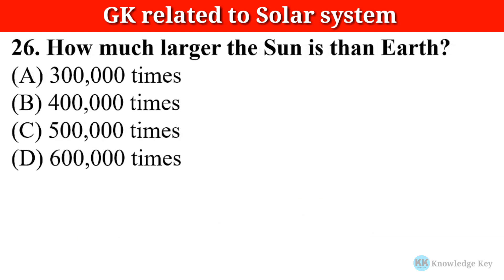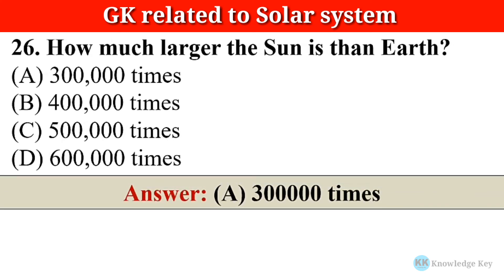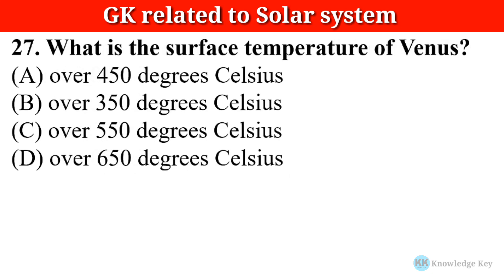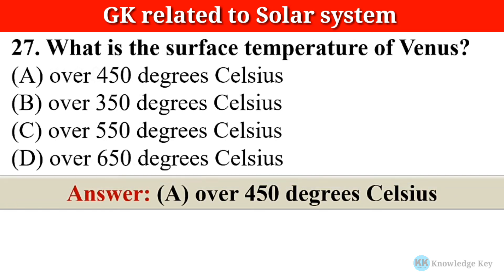Question number twenty-six: How much larger is the Sun than Earth? The correct answer is option A — 3,00,000 times. Question number twenty-seven: What is the surface temperature of Venus? The correct answer is option A — over 450 degrees Celsius.